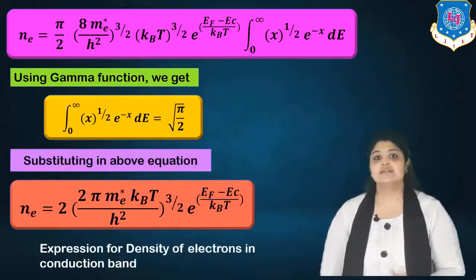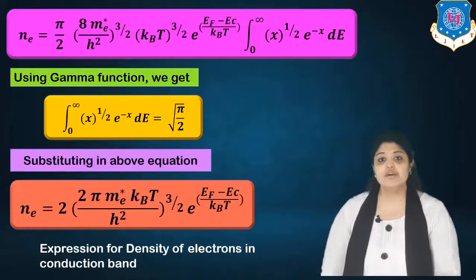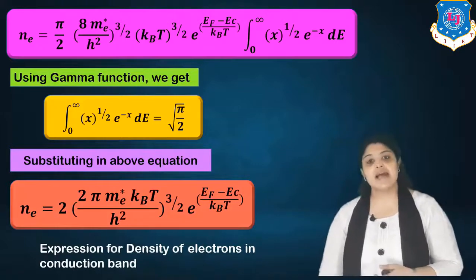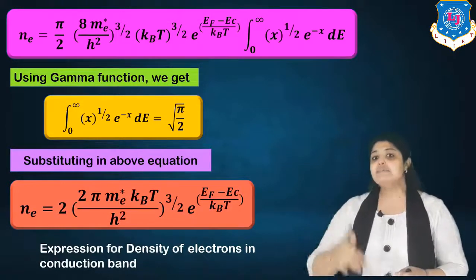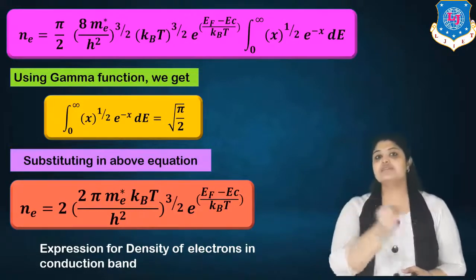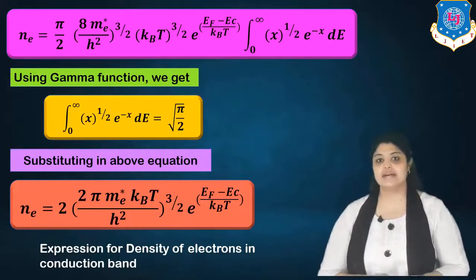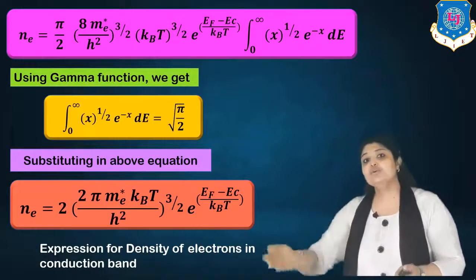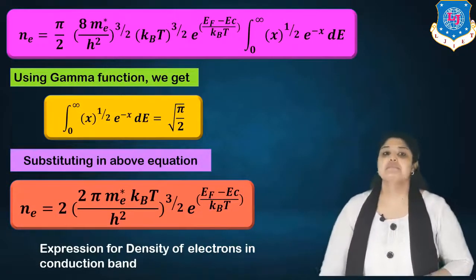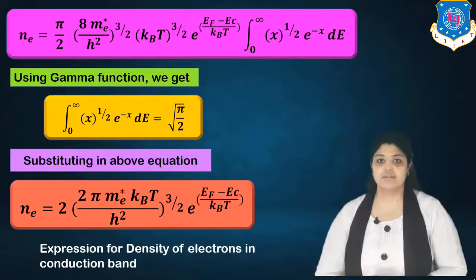Substituting the gamma function result and simplifying, the final expression for the density of electrons in the conduction band is: NE = 2 × (2π ME* kBT / ℏ²)^(3/2) × e^((EF − EC)/kBT). This is obtained by taking 8^(3/2) common, canceling the factor of 2 in the denominator, and combining π with √π to give π^(3/2).